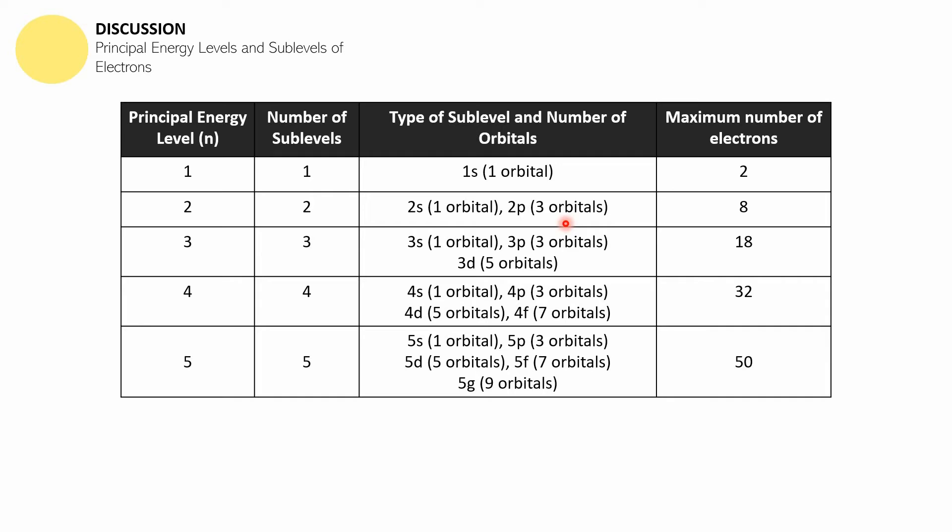I hope that you take notice of this because there's a possibility for principal energy levels to be as high as five. The number of sublevels you will find in the fifth energy level will be five. Usually it's s, p, d, f; it will now be s, p, d, f, and g. The maximum number of electrons that the fifth energy level can accommodate will now become 50.